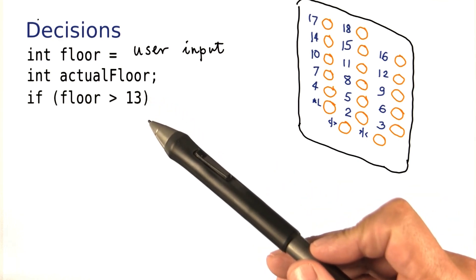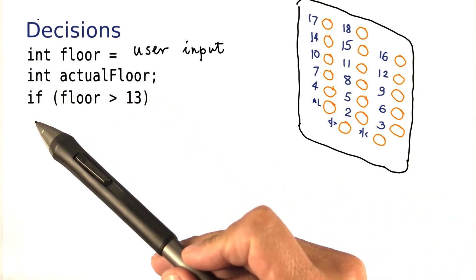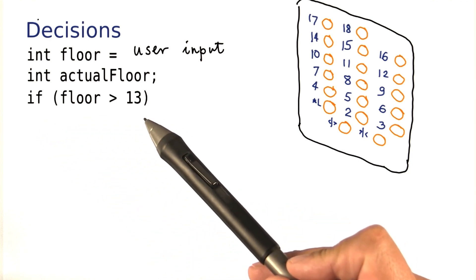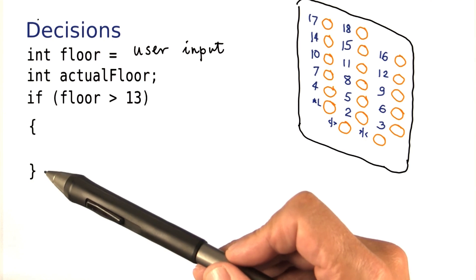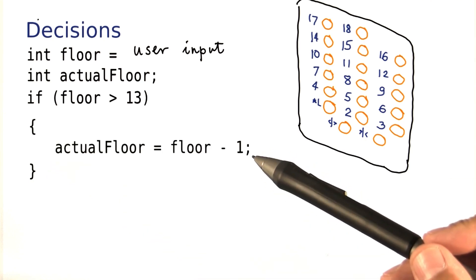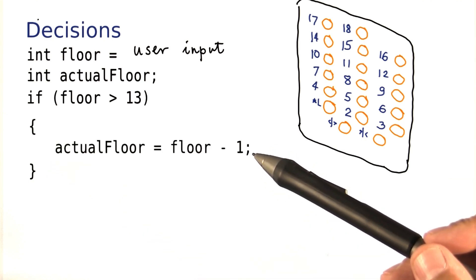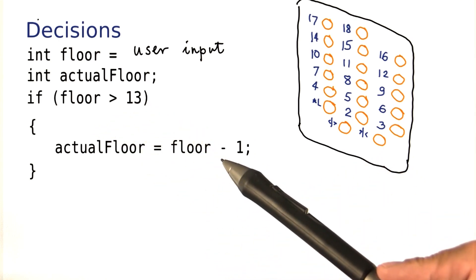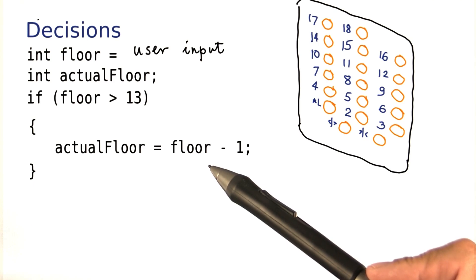Then we need to make a decision. In Java, you use the if statement to make decisions. And you enclose the condition in parentheses. Then you use a pair of braces. And inside you put the statement or statements that you want to have executed when this condition is true. So if the floor is greater than 13, then we want to adjust by subtracting 1.